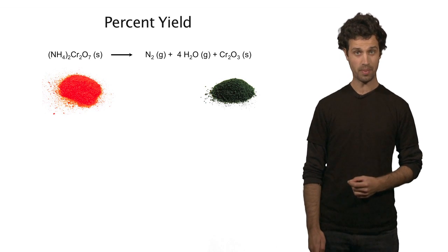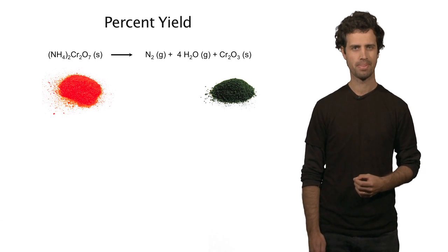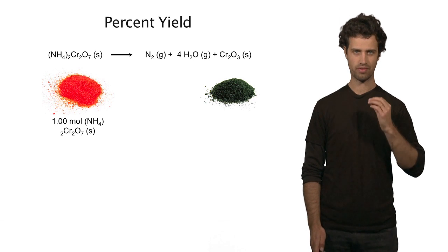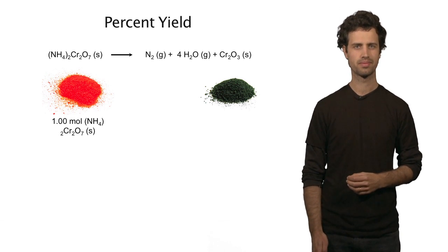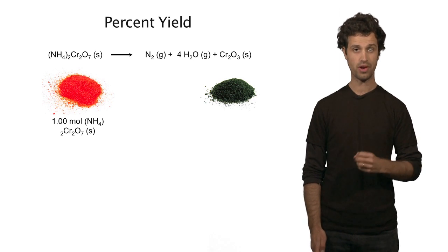Here is a reaction of ammonium dichromate that is formed into chromium oxide once again. Let's assume that at the very start of my reaction I have a total of 1 mole of the reagent. Given this, how many moles of the product, chromium oxide, do I form?